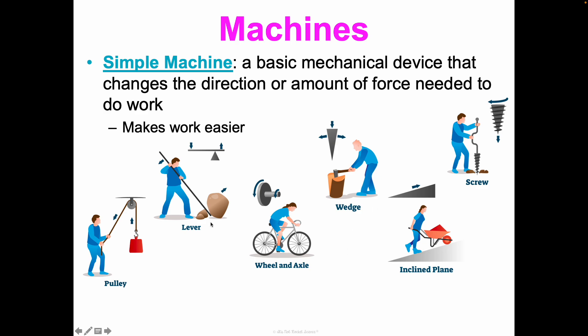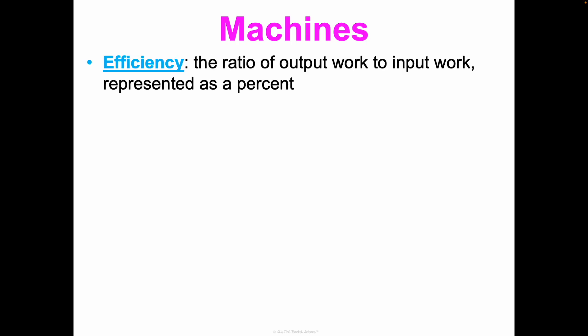So it simply makes work easier. We typically will categorize them as six different simple machines. You have pulleys, levers, wheels and axles, wedges, inclined planes, and then also screws. And then a compound machine is what we just think of as just a machine. It's just a combination of two or more simple machines. So when we start putting these things together into more complex arrangements, it's a compound machine.